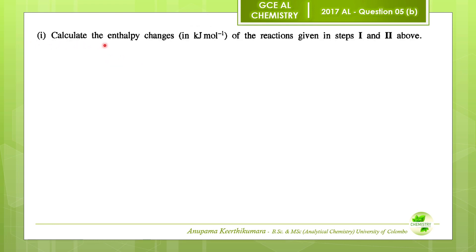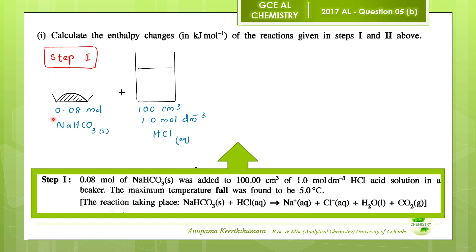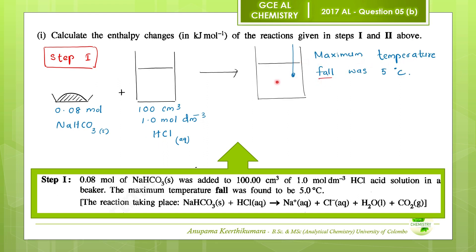Question number 1: calculate the enthalpy changes in kilojoules per mole of the reactions given in steps 1 and 2. During step 1, 0.08 moles of solid sodium bicarbonate was added to 100 cm³ of 1 mol/dm³ aqueous HCl solution. The maximum temperature fall of the final system was 5°C. This means the reaction is endothermic — the reactants absorb energy from the surroundings, so the sign of ΔH is positive.